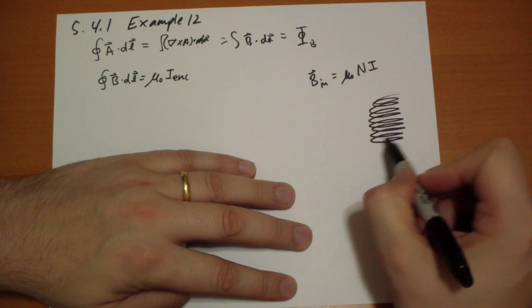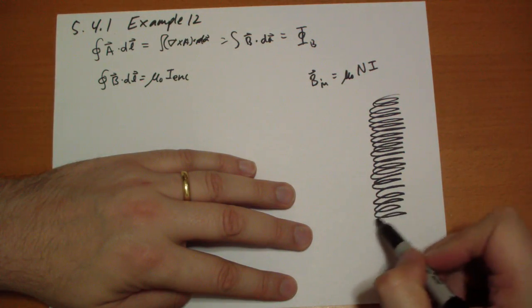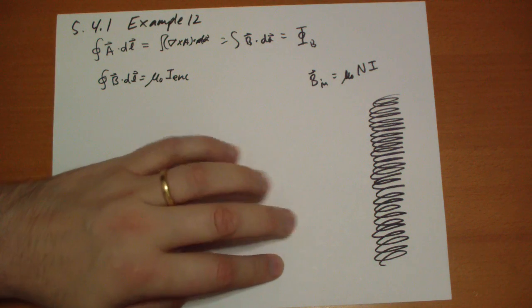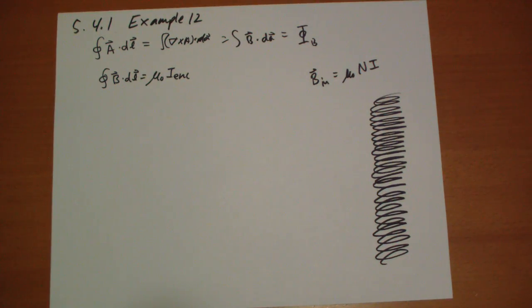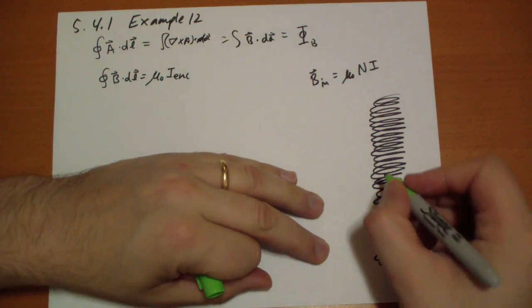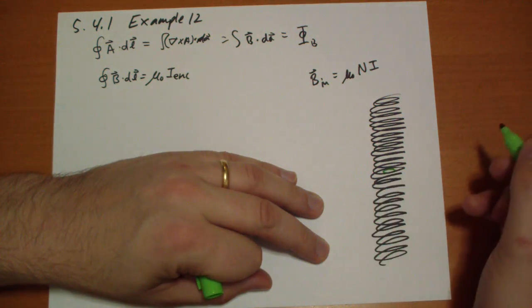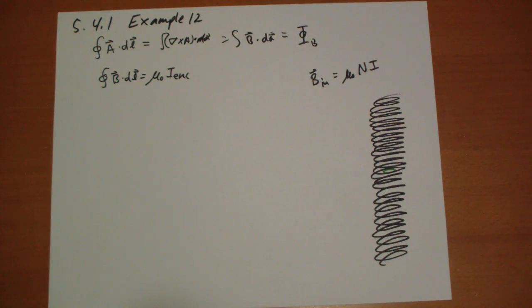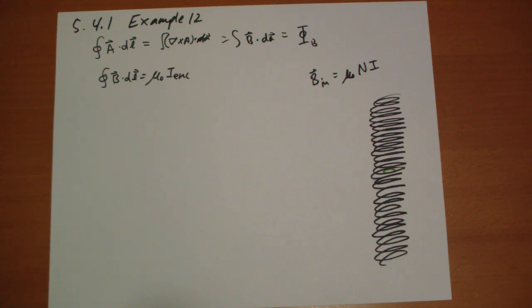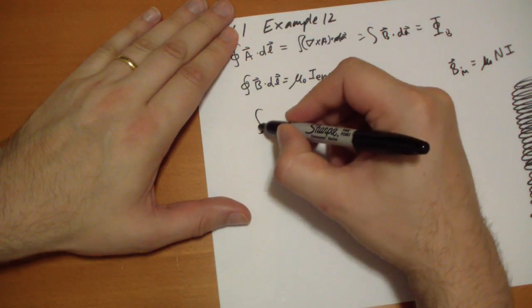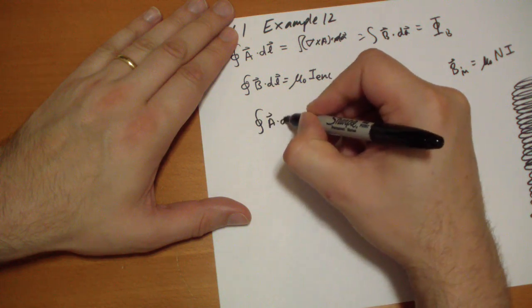So we have our infinite solenoid going like this. I'm doing pretty good. I was worried that it was going to turn out like a Charlie Brown dust cloud. So if we take a horizontal loop like that in the green, a circle centered on cylindrical coordinates, all that kind of stuff. So we can calculate that.